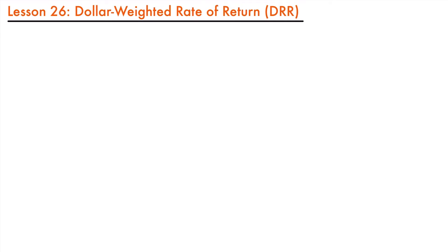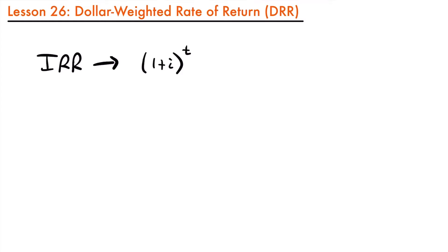There is a big difference between the dollar-weighted rate of return and the internal rate of return, which is that the dollar-weighted rate of return is based on simple interest, not compound interest like the internal rate of return. When we looked at the internal rate of return, we accumulated interest using the accumulation factor of 1 plus the interest rate to the power of t. But when we use the dollar-weighted rate of return, we are going to use the simple interest accumulation factor, which is 1 plus i times t.